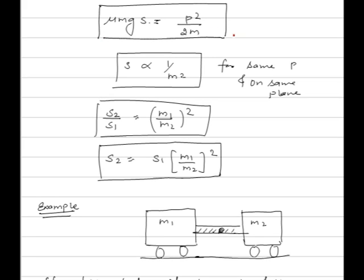If bodies have the same momentum and move on the same plane, then mu mg into s equals p squared upon 2m. Since mu, g, and p are constant, s is proportional to 1 upon m squared. Therefore s2 upon s1 is equal to (m1 upon m2) whole squared, and s2 is equal to s1 into (m1 upon m2) whole squared.